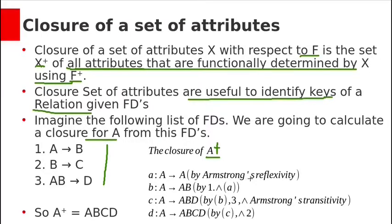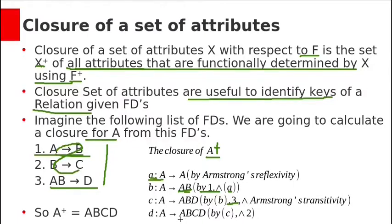A derives A by the reflexive rule. From the first functional dependency we can write A → AB, so A can derive A and B. Now A can derive ABD by functional dependency 3. Next, A can derive ABCD because A can derive B and B can derive C. By transitivity, A can derive C, and D is already included. So the closure of A, A+, equals the set of attributes {A, B, C, D}.